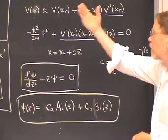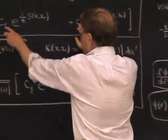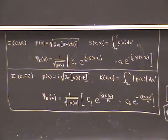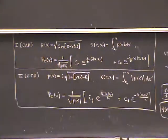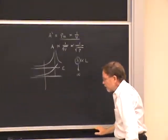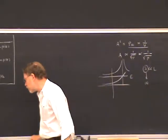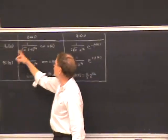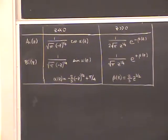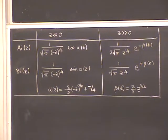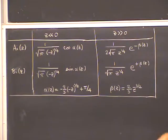We now have three different regions with three solutions, each with two coefficients. There must be connections amongst these coefficients, not six independent coefficients altogether. Before working out those connections, let me tell you about the Airy and Bairy functions. If you go to books on standard special functions, you'll find limiting forms for these two functions when z is large and negative or large and positive. These are asymptotic forms valid for large z. I could derive these formulas—it's not that hard, but it would take a lecture and a half. Let's just say we read them out of the books.